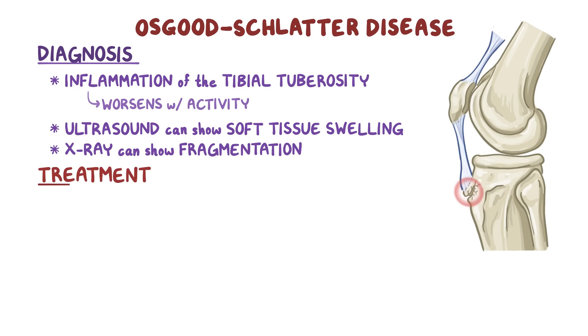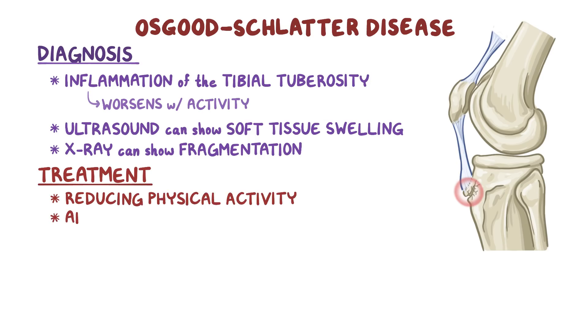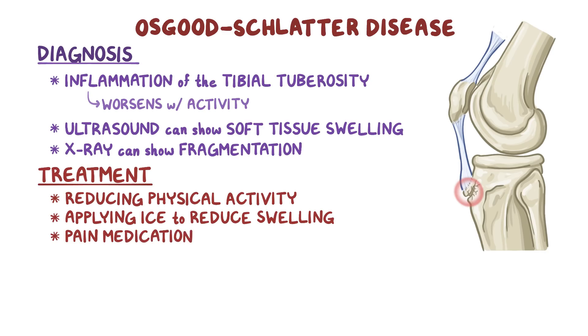The treatment of Osgood-Schlatter disease mainly consists of reducing physical activity and applying ice to the tuberosity to reduce swelling, as well as pain medication.